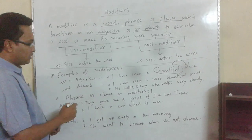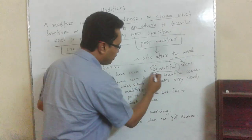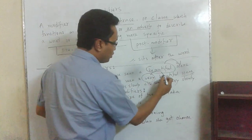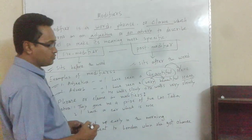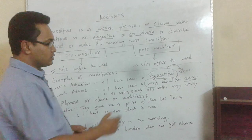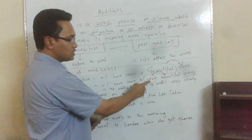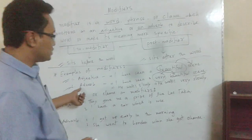As an adverb: I have seen a very beautiful scene. Here, very is modifying the word beautiful. The word beautiful is adjective and the word very is adverb.